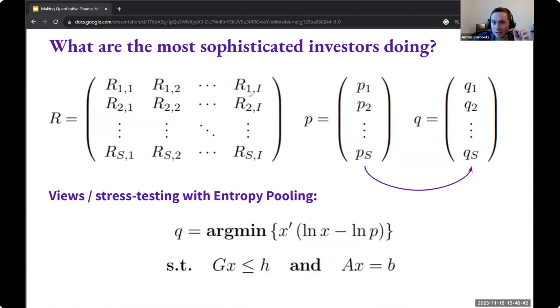Associated with these joint scenarios is a scenario probability that we collect into one prior probability vector that we call p. If you then want to implement subjective views or do stress testing, then one way that you can do it is by changing these probabilities to something else. And then the big question is, of course, which method is good for making these adjustments?